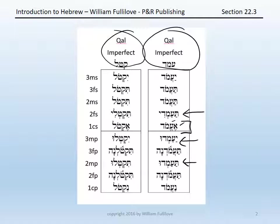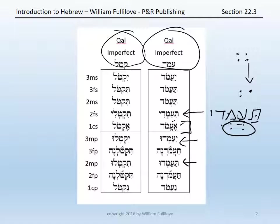This is an application of the rule of schwa that you learned in chapter six. Remember, in Hebrew, if two vocal schwas would occur in a row, the first of them becomes the corresponding short vowel — a hiriq — and the second becomes a silent schwa. So the second feminine singular form would originally be ta'amodna. However, because these are still technically two vocal schwas in a row, even though the first is compound, the compound schwa becomes a full short vowel of the same vowel class — a patach — and then the second schwa becomes silent, giving ta'amdi.